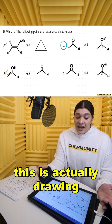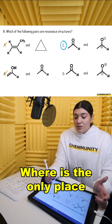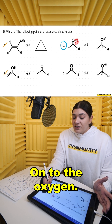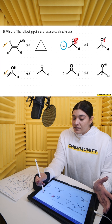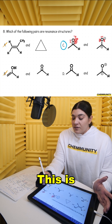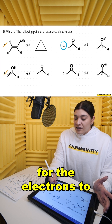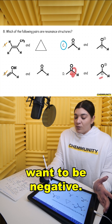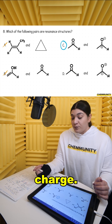Another way you can look at this is actually drawing the resonant structure. Where is the only place that this can move? Onto the oxygen — that's where our new lone pair is. This only had two. This is the correct structure. It does not make sense for the electrons to now move onto the carbon. Carbon does not want to have a negative charge.